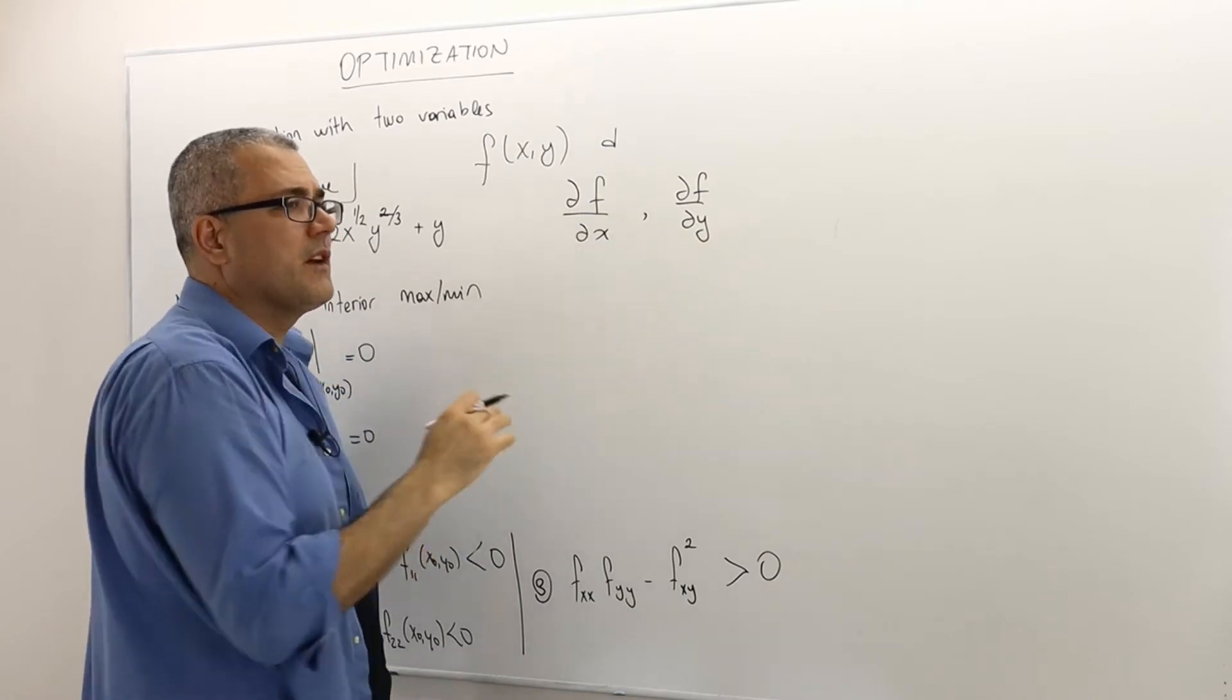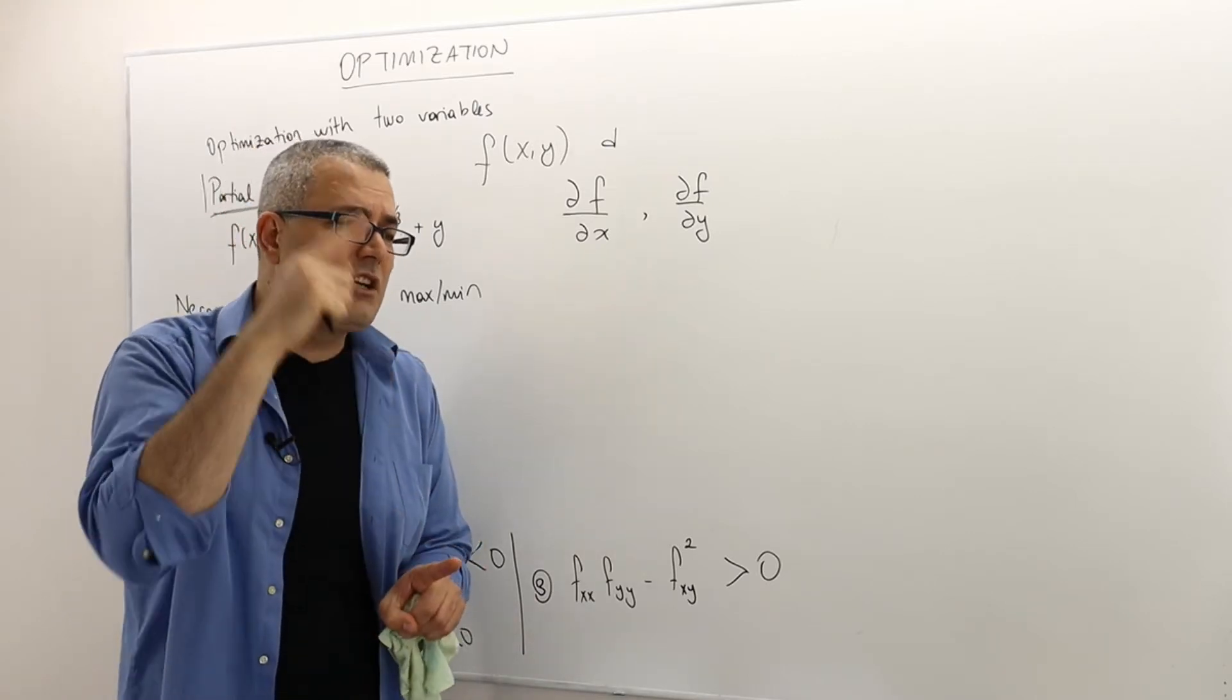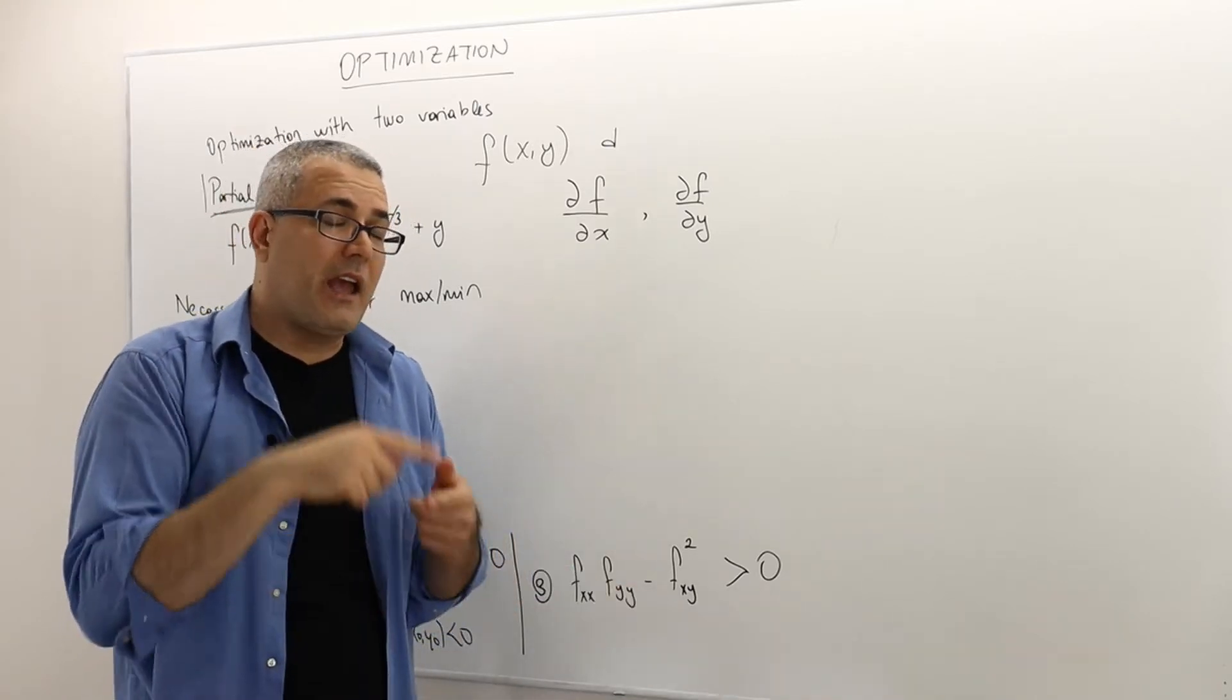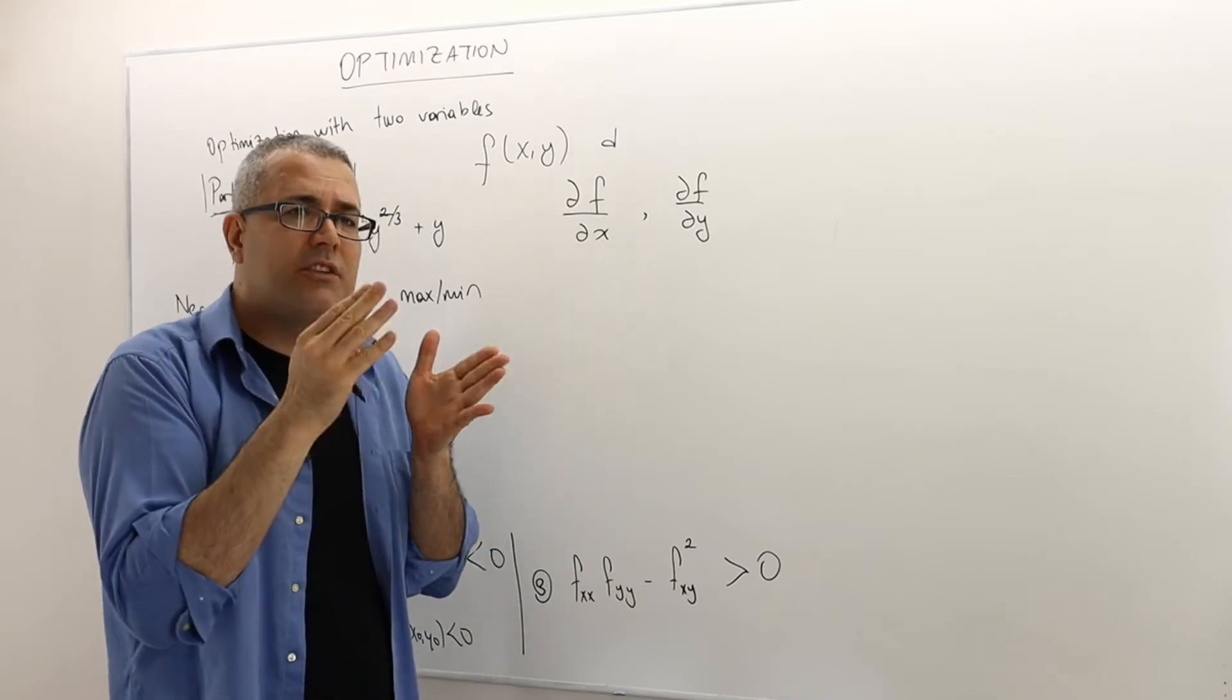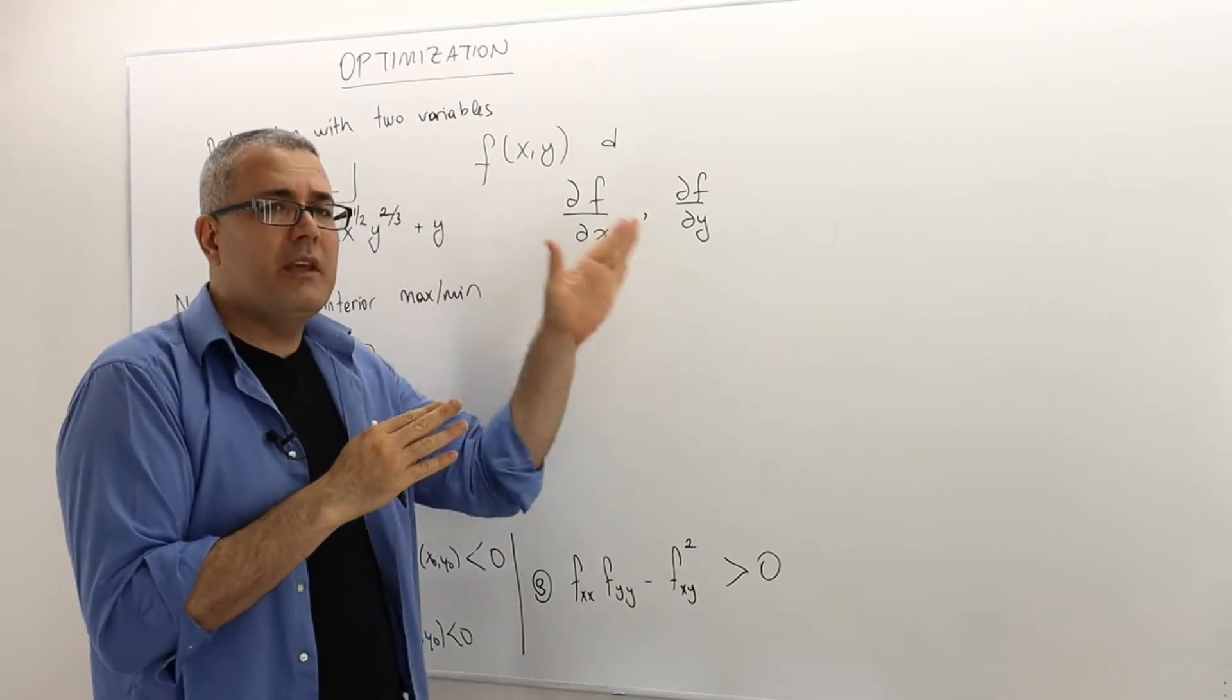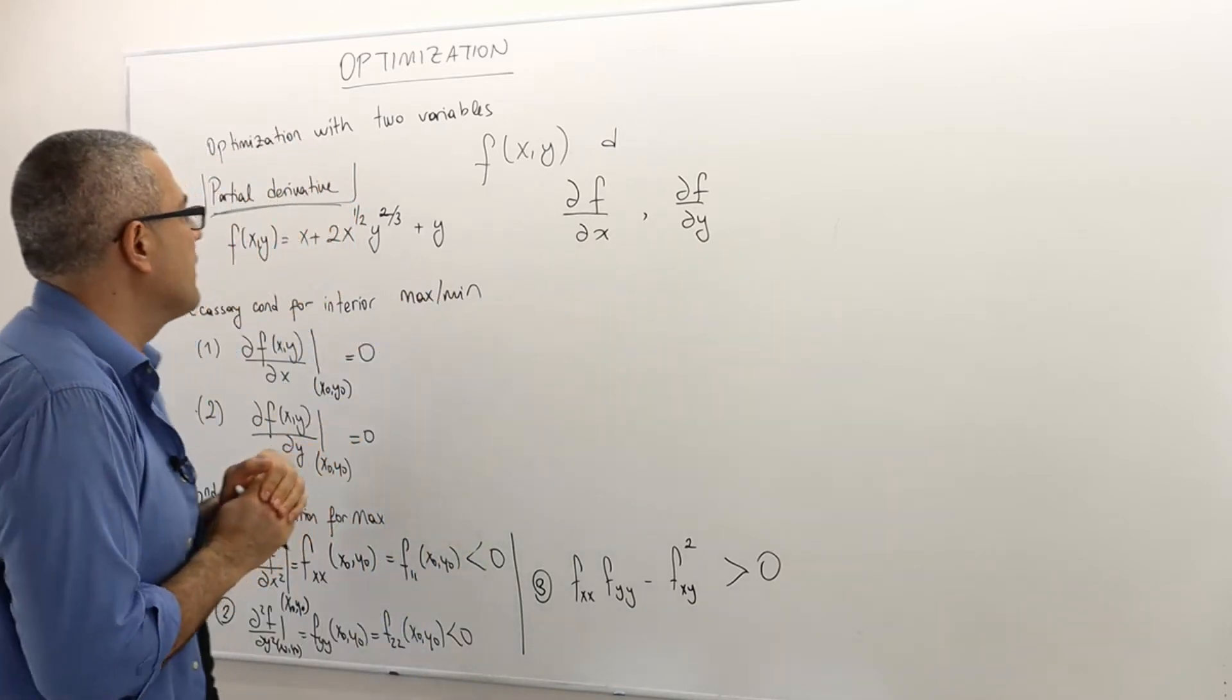And then del f del y means this is partial derivative with respect to x. And this means I am keeping x component fixed. So I'm not making any increase in the x axis, but I'm making an increase in the y axis, keeping x fixed. So this is partial derivative with respect to y.